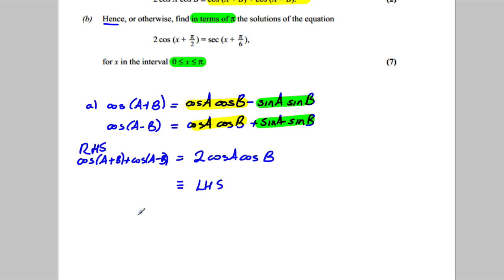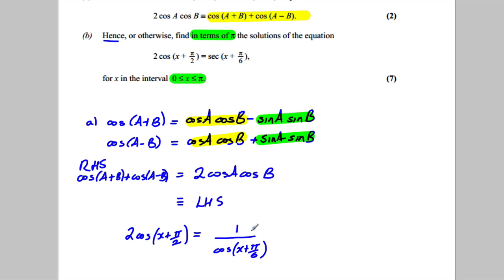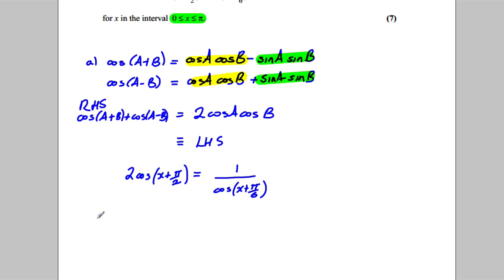So let's firstly just write down what we're dealing with here. We're asked to solve two cosine of x add pi by 2 is equal to sec, which I'm going to write as one over cosine x plus pi by 6. Now if I multiply both sides by the cosine,